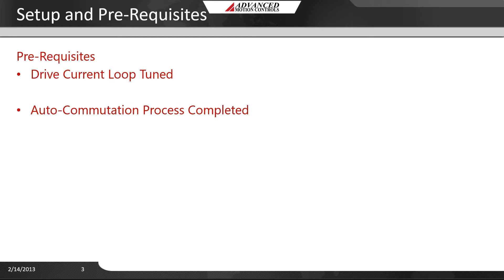The second task is to have audit commutation completed. This is the process of finding the commutation for a brushless DC motor. Finally, unlike in the previous two steps, we expect your motor to be connected to a load.